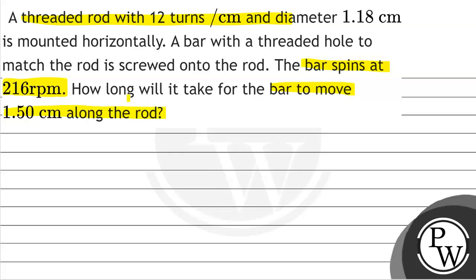So the question is asking: we have a rod that is 12 turns per centimeter, and 216 revolutions per minute. If we have to move 1.50 centimeter along the rod, then how much time will it take?